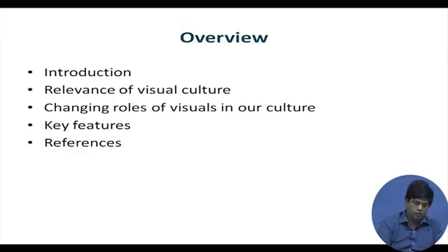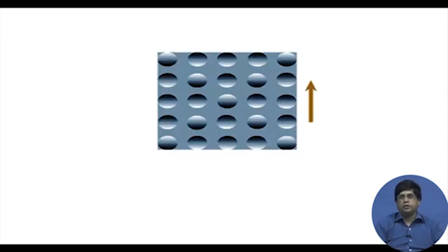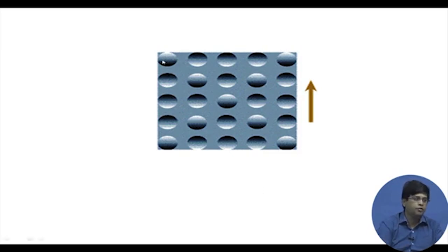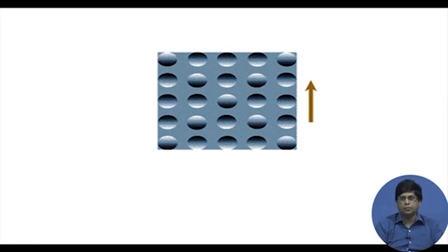Looking at these figures, you find that certain things look convex to us and certain things look concave. Now the point is, if you ask why such a thing happens, it will not be very easy to answer, because the objects that you saw were neither convex nor concave — they were on a plane surface, inside a photograph. So why is it that we experience this kind of thing? This is one dimension of visuals.